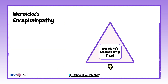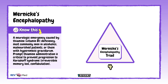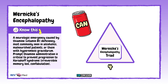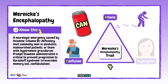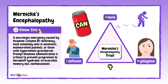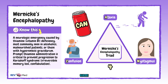Number four: Wernicke's encephalopathy triad. This is due to a thiamine B1 deficiency. Think of CAN — confusion, ataxia, and nystagmus — because it's most common, but it really involves a wide range of ocular motor dysfunction. It's often seen in alcoholics. Remember: always give thiamine before glucose.